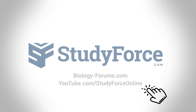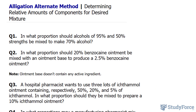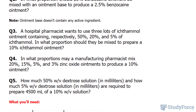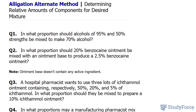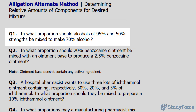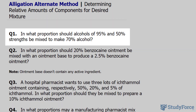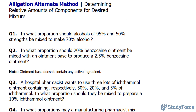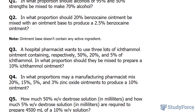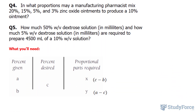In this lesson, I'll demonstrate the allegation alternate method used for determining relative amounts of components for desired mixtures. For this tutorial, I've prepared five questions, and normally you would need to know how to do this in a pharmaceutical setting. There are two main ways to do this: one is a strict algebraic approach, and another involves using a schematic. For the sake of simplicity, I'll only be showing you one method, and that involves using this chart.